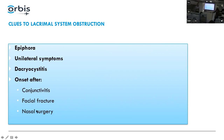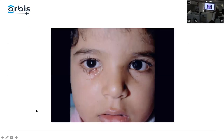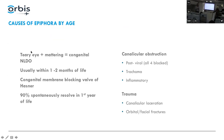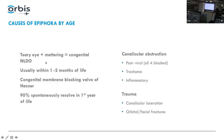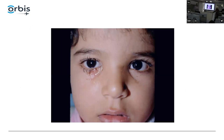In kids, tearing plus mattering — meaning crusty, pussy discharge — I consider that congenital nasal lacrimal duct obstruction. It usually occurs within one to two months of life. There is blocking of the valve of Hasner in the inferior turbinate. Ninety percent resolve in the first year of life.